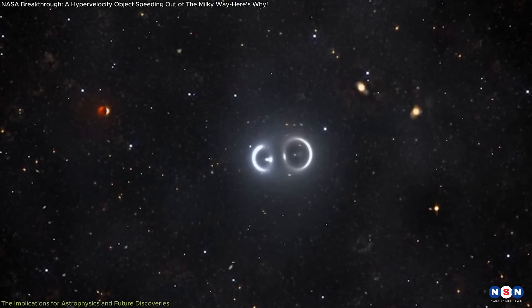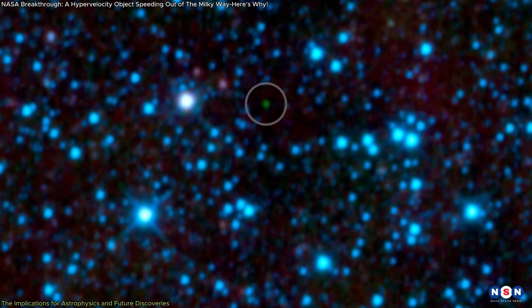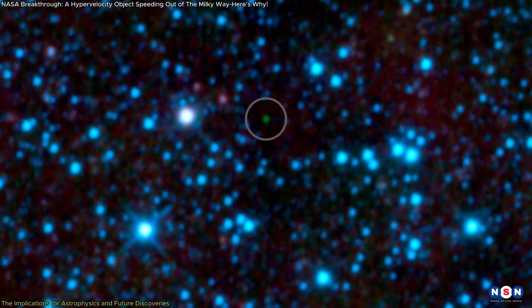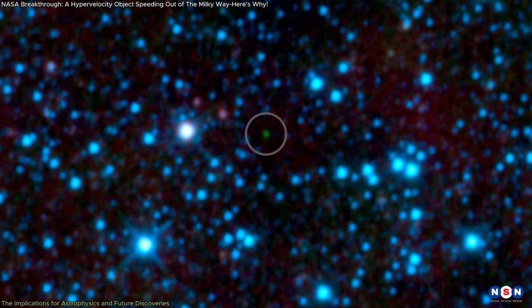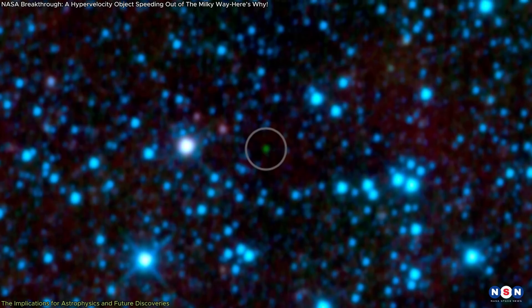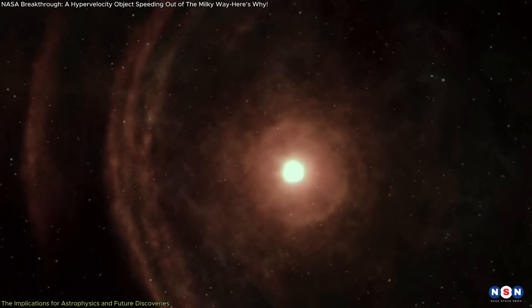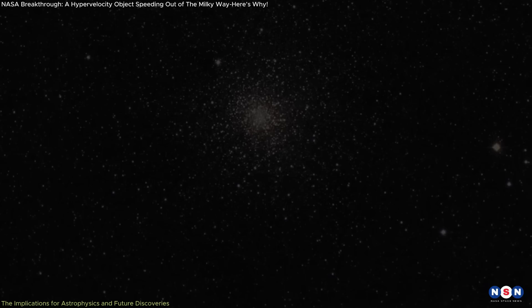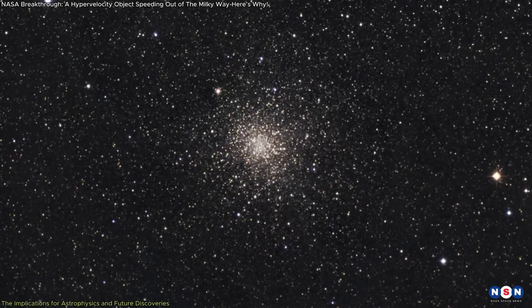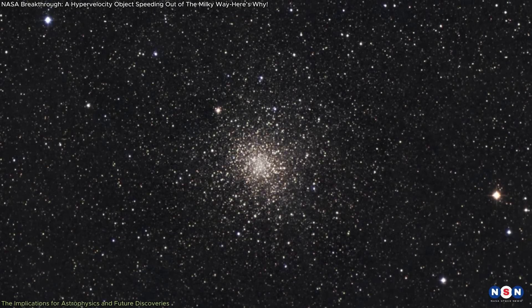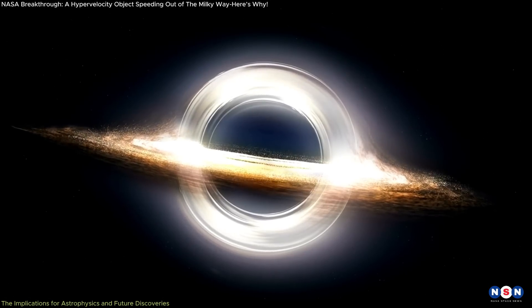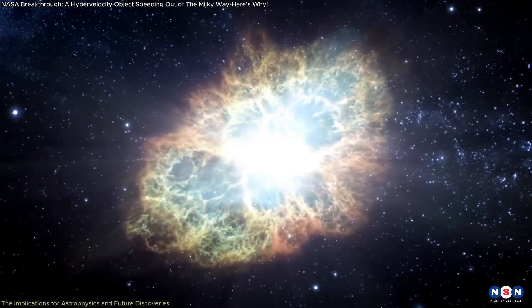CWISE J1249 isn't the only hypervelocity object. There were others that scientists discovered in the past years. For example, a brown dwarf named WISE 0810 also exhibited similar high-speed movement, although not as dramatically. Ancient stars within globular clusters too have been observed to experience similar ejection processes due to gravitational interactions with black holes or supernovae.